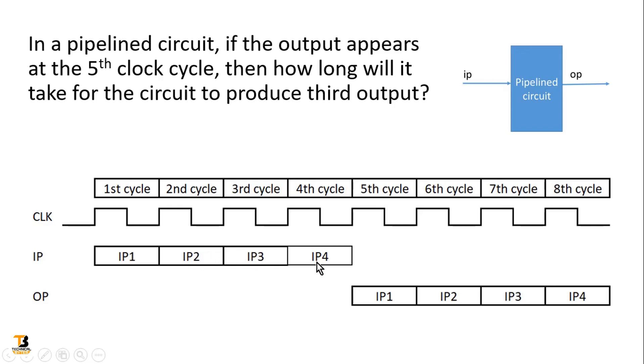Similarly, input 2 will also take three clock cycles to reach the output. Similarly input 3 will take three clock cycles to reach at the output. So accordingly you can calculate at which clock number it will appear at the output.